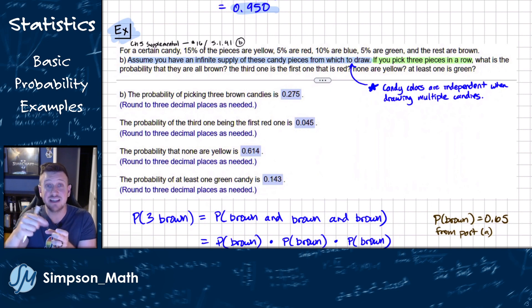...as I start pulling out candies and not replacing them, that's going to be changing the problem and making one color, the color of the first candy no longer independent of the second. That's a bit of an issue that makes a problem be more difficult and we're not quite ready for that. So this one just assumes you have an infinite supply, a really big bag. So when I pull out a brown for this first one, that does not change the probability of getting a brown on the next ones where we have independent events here.